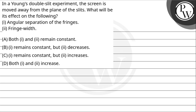Hello. Let's first read the question. In a Young's double slit experiment, the screen is moved away from the plane of the slits. What will be its effect on the following: angular separation of the fringes and fringe width?